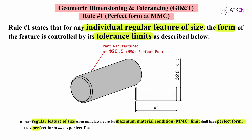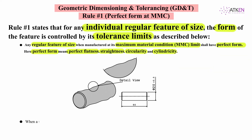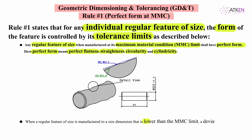Perfect form means perfect flatness, perfect straightness, perfect circularity, and perfect cylindricity. When a regular feature of size is manufactured at a size dimension that is lower than the MMC limit towards LMC, a deviation in form is permitted.